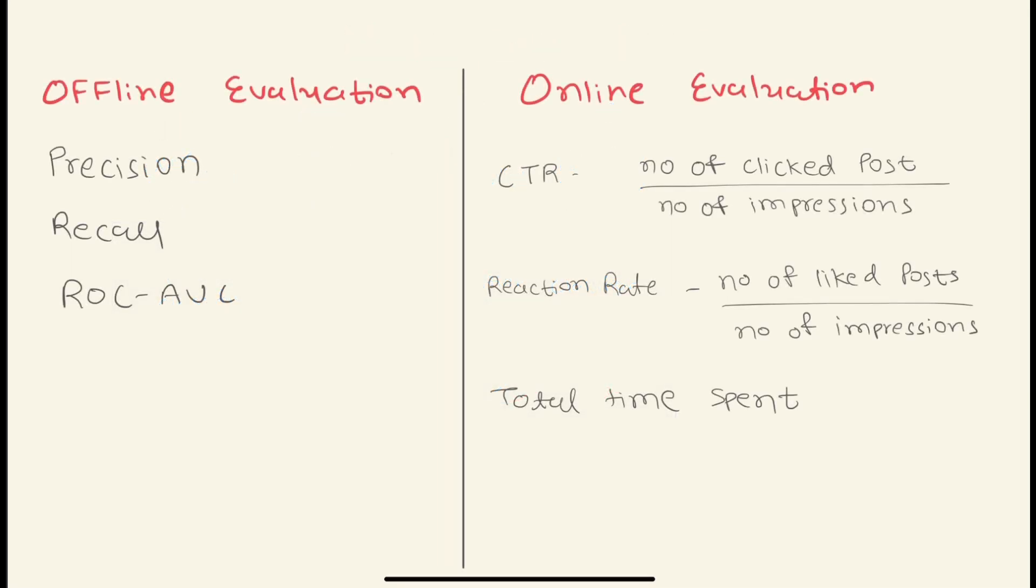At the end of the interview, we can discuss what are the offline evaluation metrics and online evaluation metrics. Offline evaluation metrics are the ones which we track when we are training the model, so we can track precision, recall, ROC-AUC score for better understanding of the model. The interviewer may ask you in detail how you do the ROC-AUC score and so on, so you have to explain that.